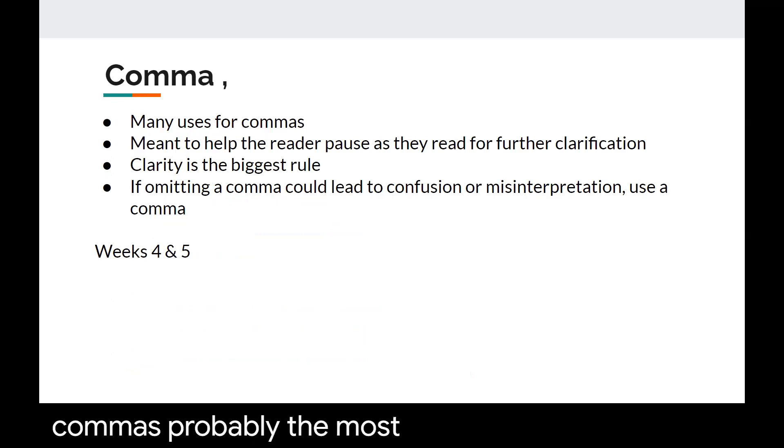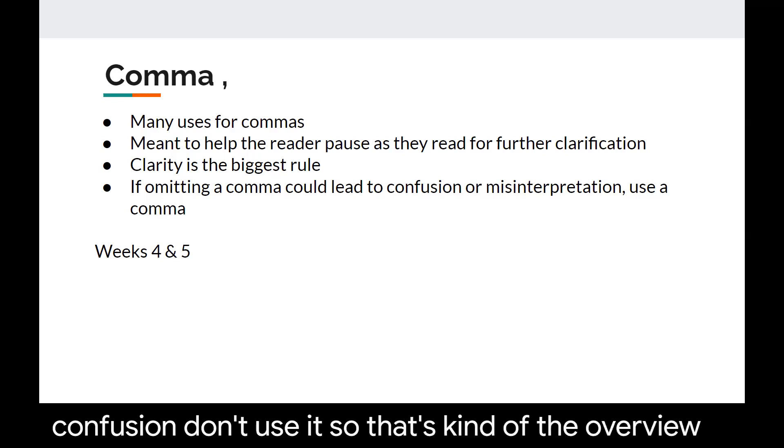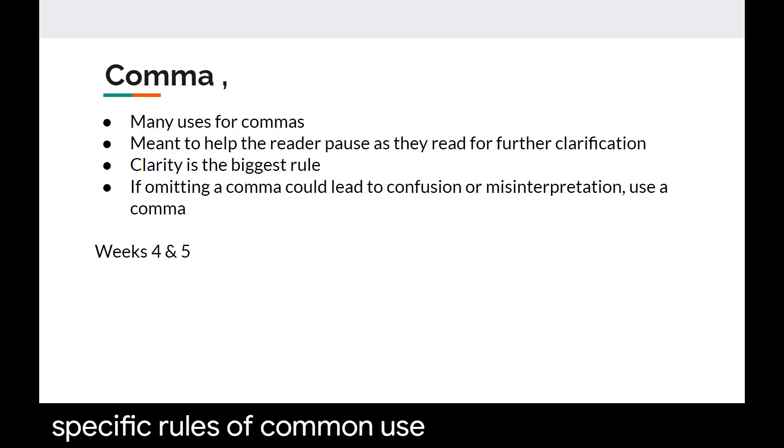The comma is probably the most misused punctuation out of all of these examples that we're talking about. In fact it's so difficult to navigate some of the rules of comma placement that we're going to devote two different days of AP homework to it in weeks four and five. Again there are many uses for commas but the main idea is that a comma is meant to make the reader pause as they read. Clarity is the biggest rule with commas so if omitting or taking out a comma would lead to confusion use it. If keeping it in leads to confusion don't use it. So that's kind of the overlying rule of commas but again we're going to get into the specific rules of comma use in later days.